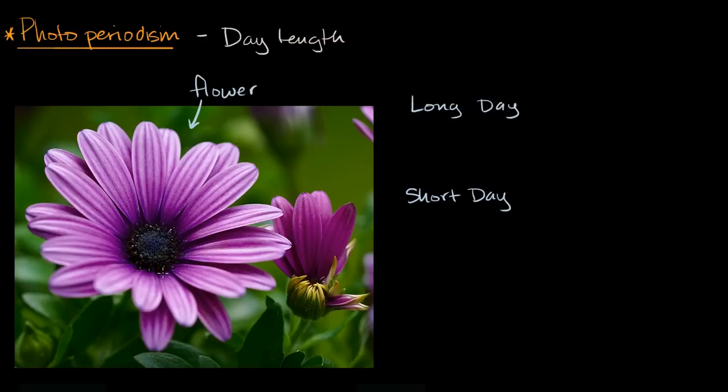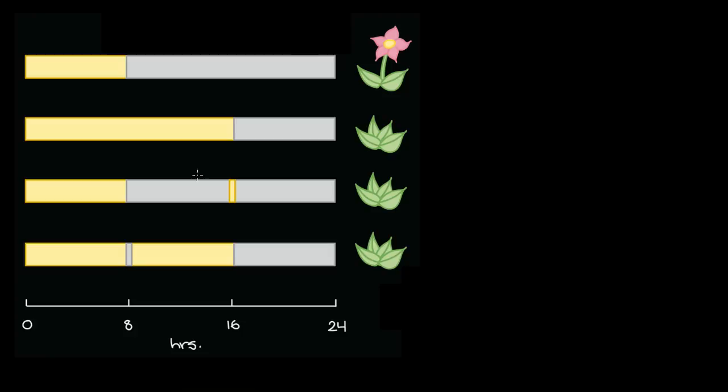So the day length seems to have something to do, somehow regulates when the plants actually flower. But how does the plant actually do that? How does it respond to the length of the day? Well, different experiments have been performed. And for example, short day plants, let me scroll down here to look at an experiment dealing with short day plants.